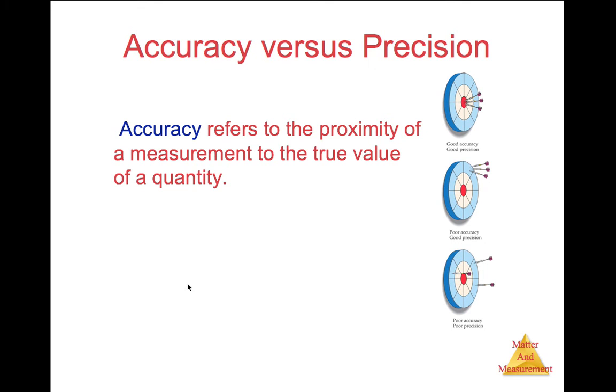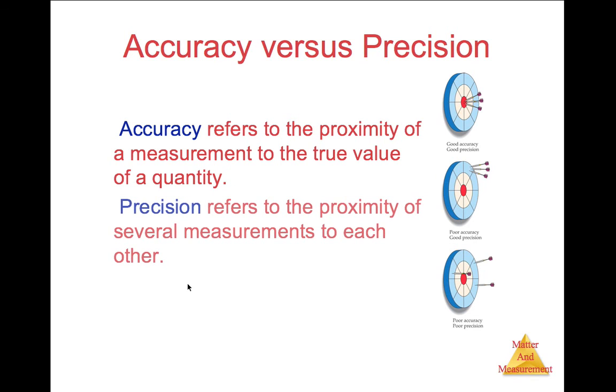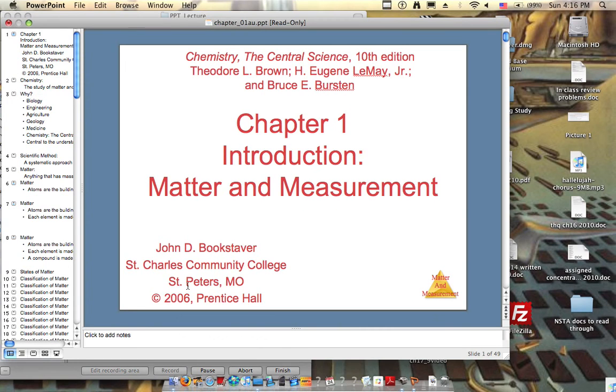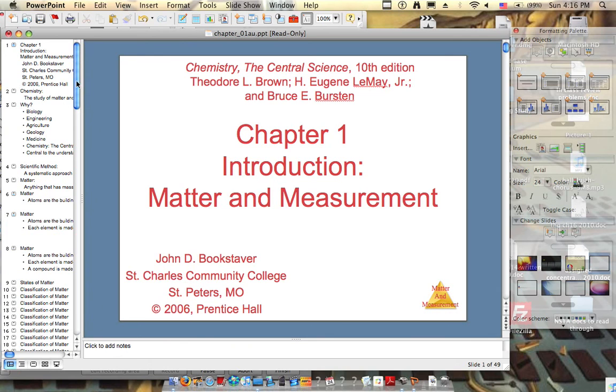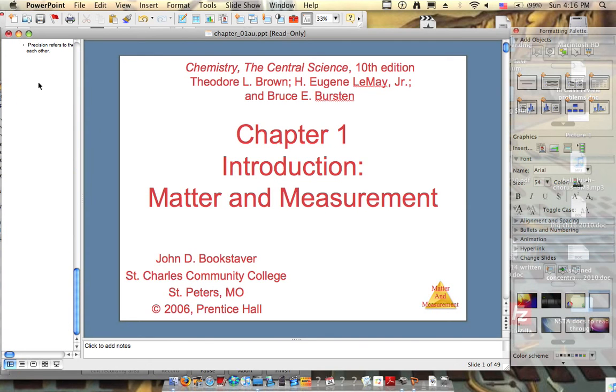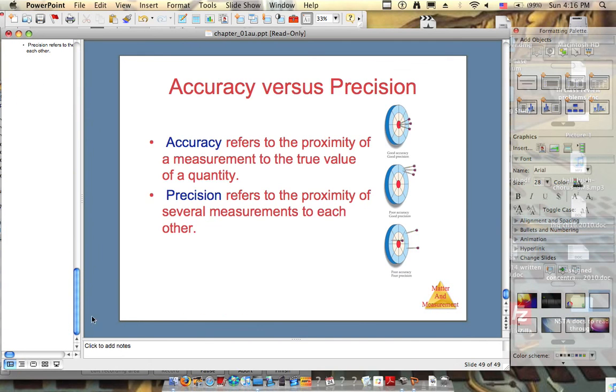Accuracy refers to the proximity of a measurement to the true value or quantity. Precision refers to the proximity of several measurements to each other. For example, let's say that we were throwing darts. And if we threw three darts...